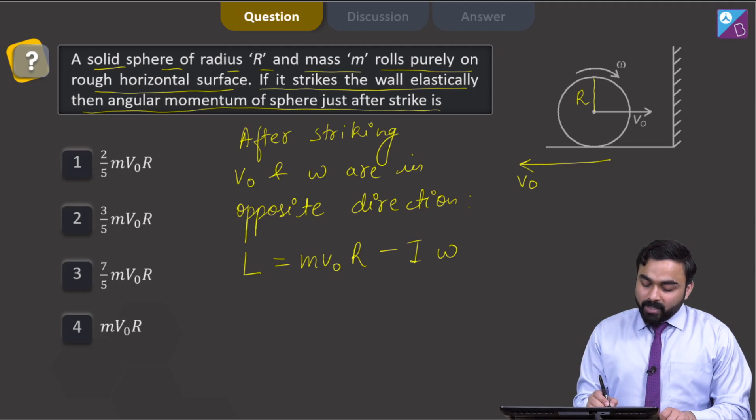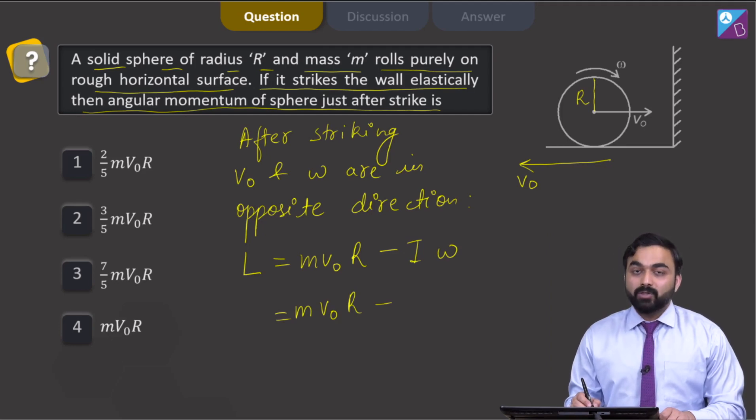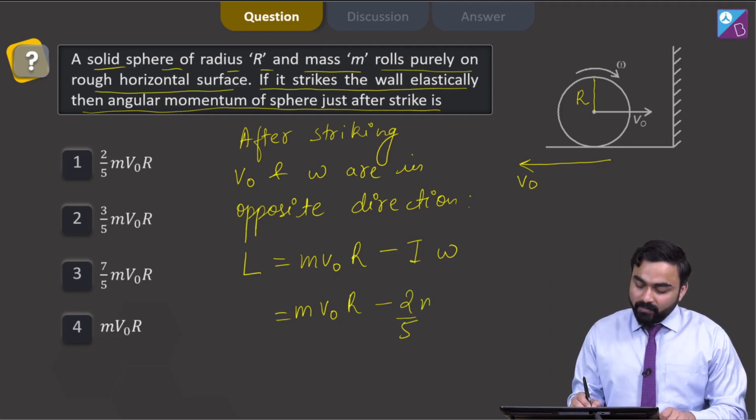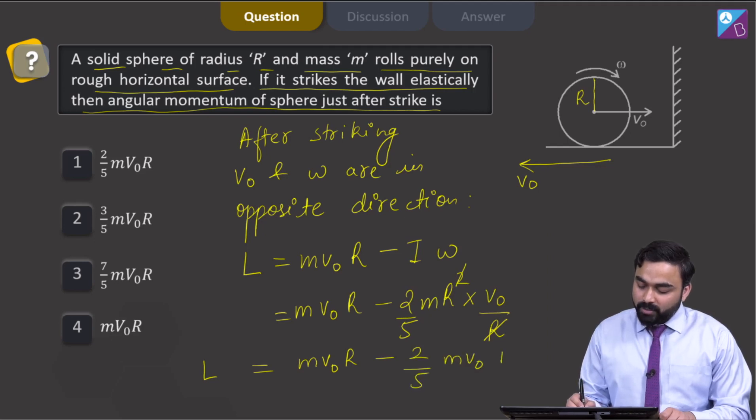So from here what I can see that I need to calculate the angular momentum of the sphere. For that, M V 0 R minus I, the moment of inertia of a solid sphere is given by 2 by 5 M R square, and omega can be written as V 0 by R. This R will cancel out here. What will be left, L will come out to be M V 0 R minus 2 by 5 M V 0 R.